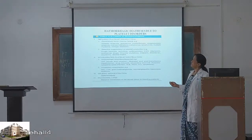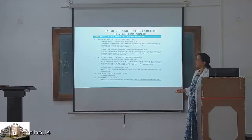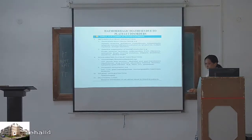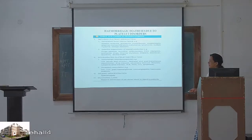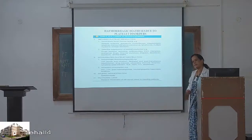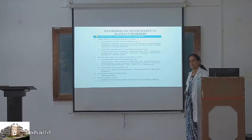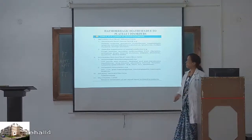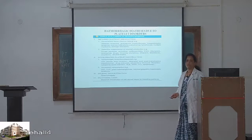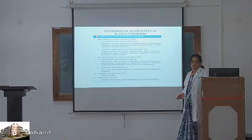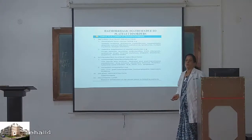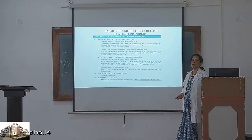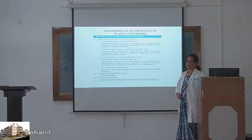Hemorrhagic diathesis due to platelet disorders: one is a quantitative defect, the other is a qualitative defect. When there is splenomegaly, all the platelets get trapped in the spleen, causing hemorrhage. ITP — immune thrombocytopenic purpura, also called idiopathic thrombocytopenic purpura.